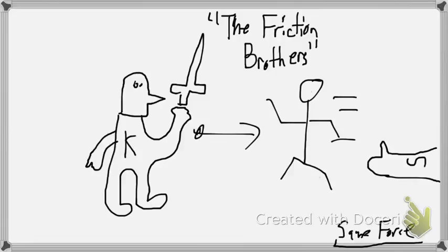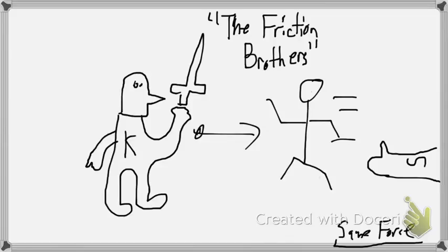So only one happens at a time. Static friction tries to prevent the object from sliding in the first place and can push back with a range of values, anything from zero to some maximum value. Once that maximum value has been exceeded, static friction fails, and the object begins to slide. The object begins to move. That's when kinetic friction pushes back and tries to stop it. And that's how the two knights, the friction brothers, try to keep their castle safe.